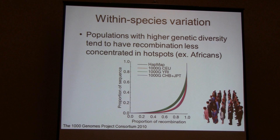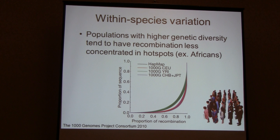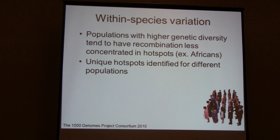Recent studies have given us a picture of within-species variation in recombination in humans. For certain populations, recombination is less concentrated at hotspots and tends to be more evenly distributed across the genome — specifically for populations such as the Yoruba in Africa. We also find that certain human populations have unique hotspots not shared between populations, shown in studies beyond the 1000 Genomes project as well.